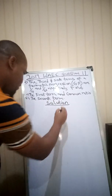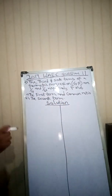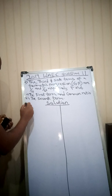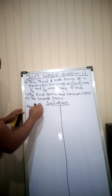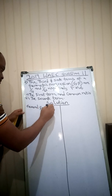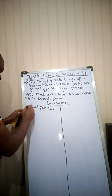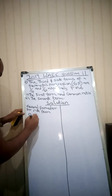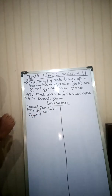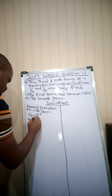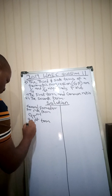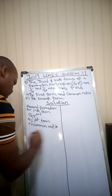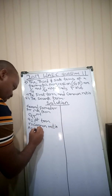Our solution. Let me divide the board into two so I have space to complete it. Now, what's the general formula for a geometric progression? The general formula for the nth term is ar^(n-1), where a is the first term, r is the common ratio, and n is the number of terms.